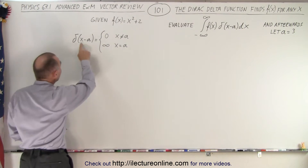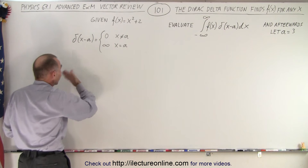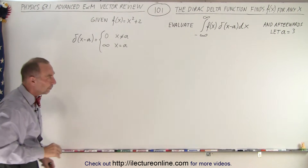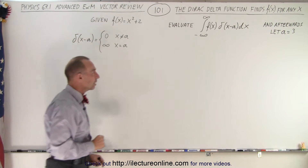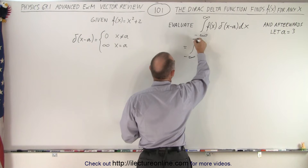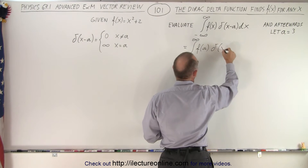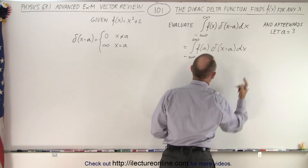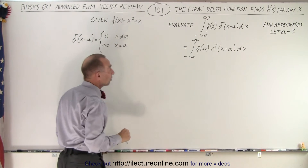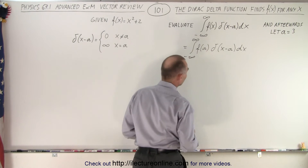Let's verify that makes sense: if we let x equal a, we have a minus a which is zero, giving us our typical delta function of zero, which is infinity. That's why the spike happens when x equals a, not when x equals zero. So inside the integral, the delta function only contributes meaning when the function is evaluated at a times that delta function.